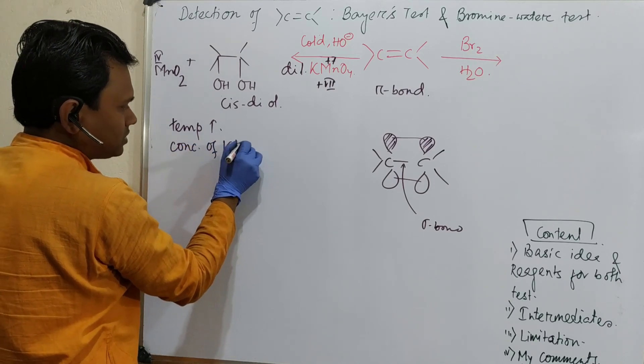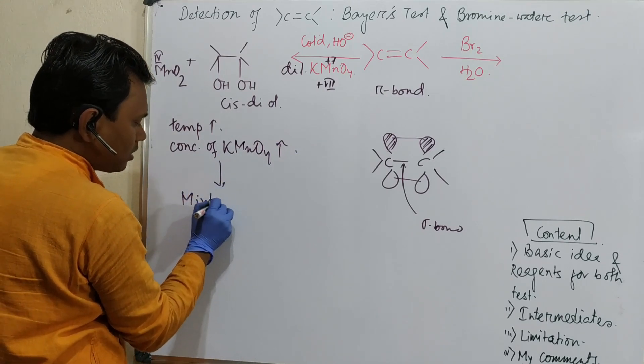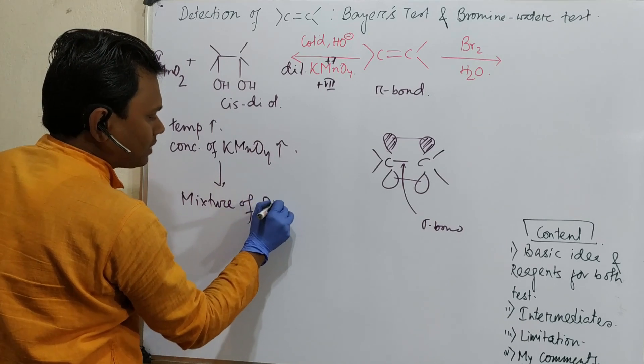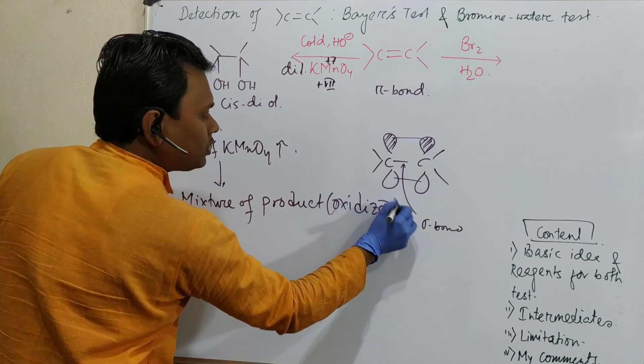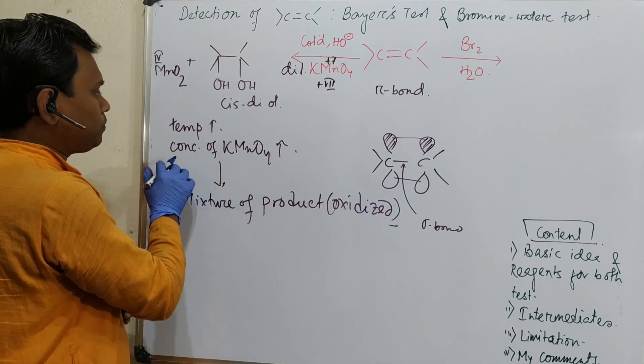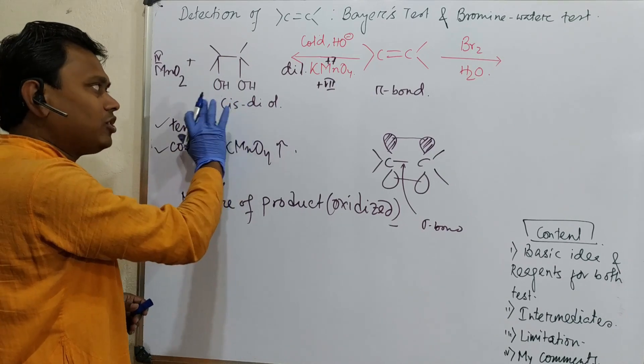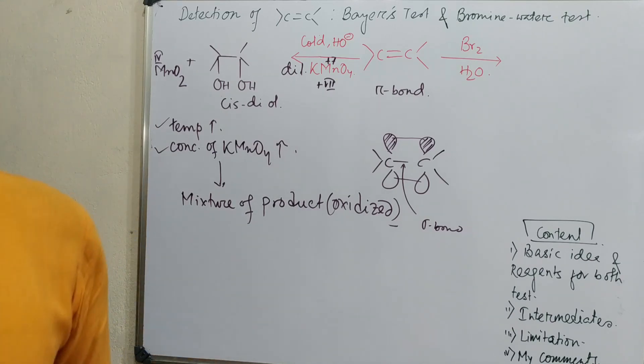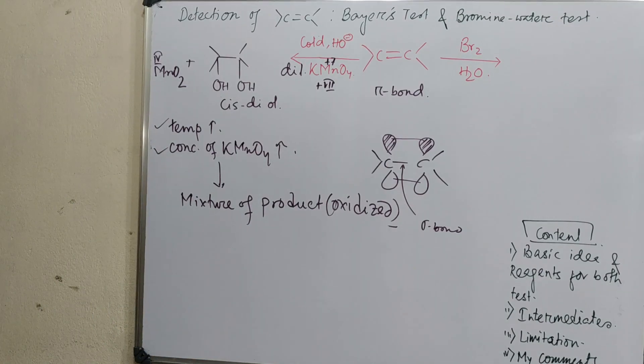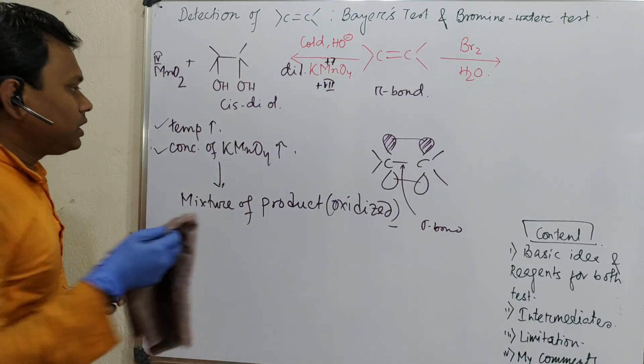Or better to say, oxidized products. Why? Because KMnO4 is a very strong oxidant. If you use relatively harsh conditions, it will produce diol but won't stop at this stage. It will produce a variety of other oxidized products. So this part we understood.